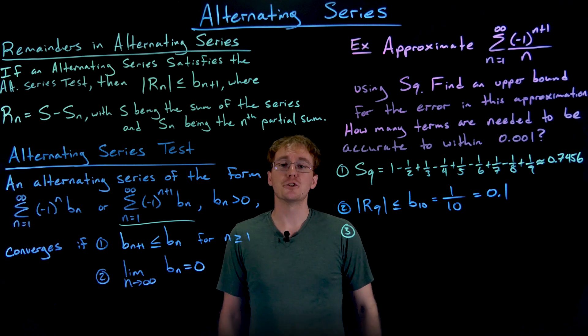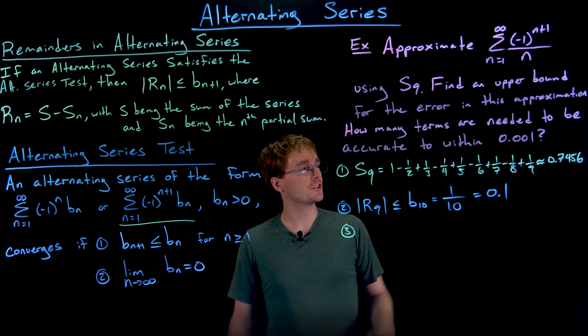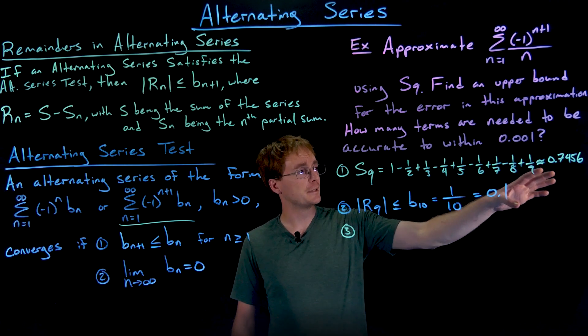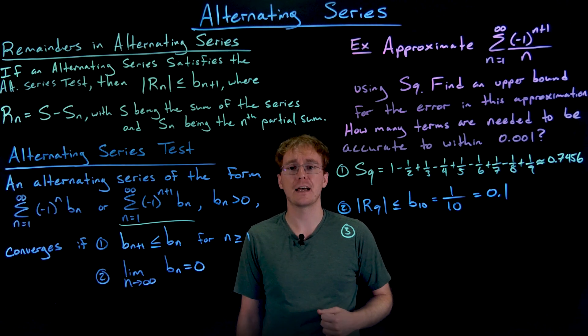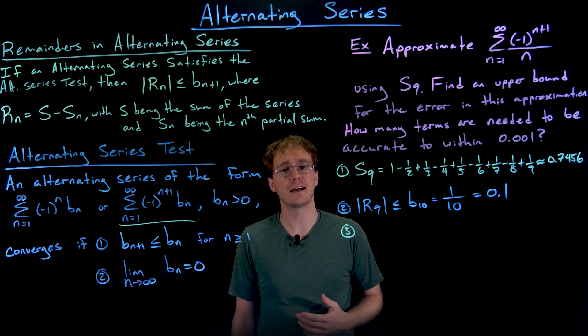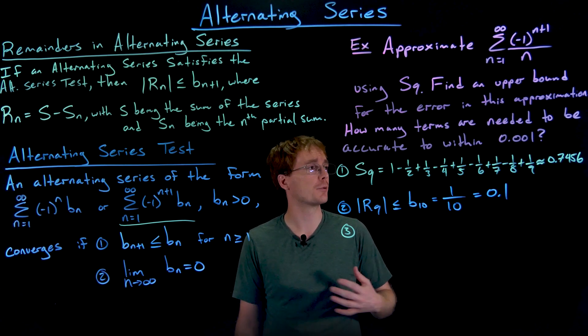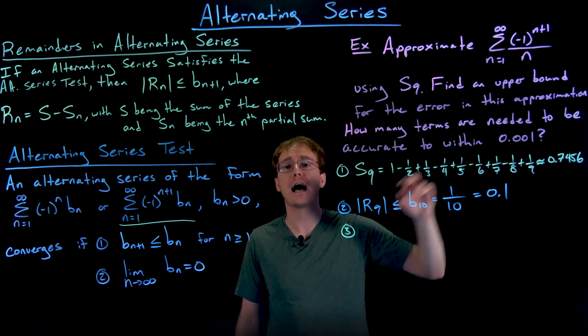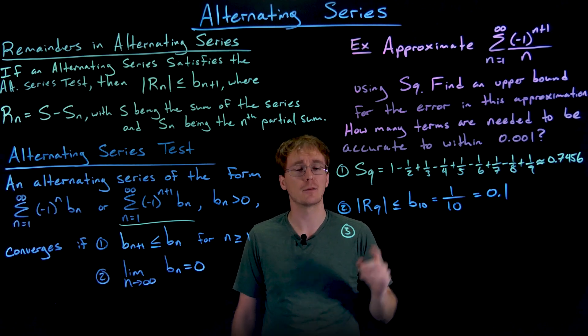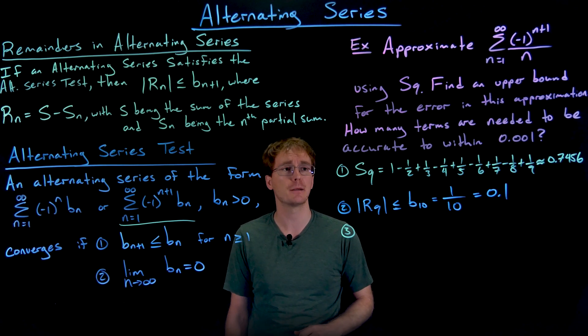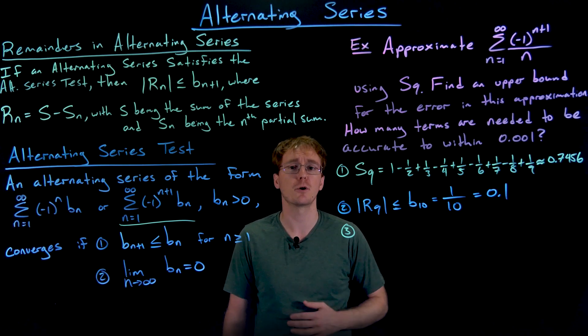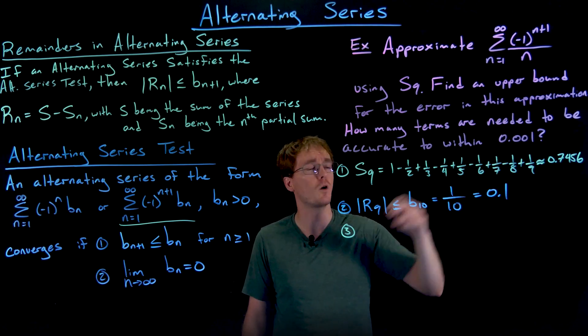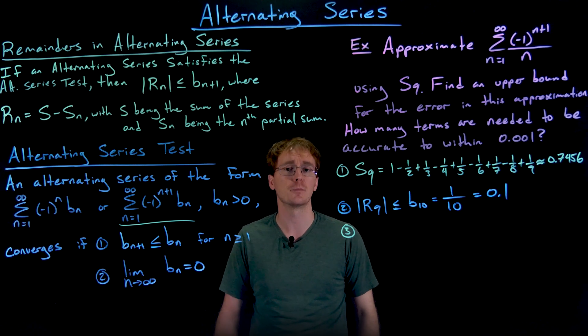All right, so with the first two parts of our example done, we can see so far that our estimation here is off by at most one tenth. But what if we wanted to be more accurate than that? How many terms will we need to add up to guarantee that our approximation is off by at most one one thousandth? That's what we're figuring out in the third part of this example, how many terms are needed so that our approximation using a partial sum is accurate to one one thousandth or about three decimal places.